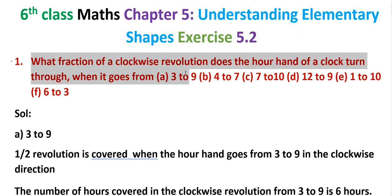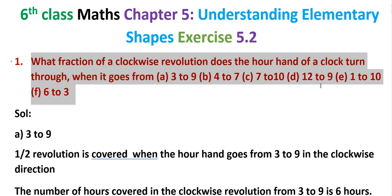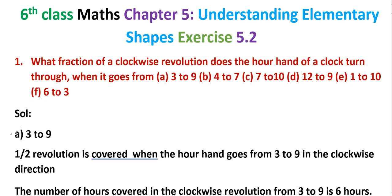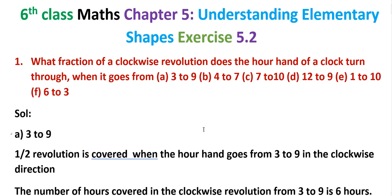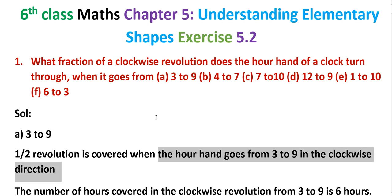First question: what is the fraction of clockwise revolution the hour hand of the clock turns through? It goes from 3 to 9, 4 to 7, 7 to 10, 12 to 9, 1 to 10, and 6 to 3. Solution A: 3 to 9. Half revolution is covered when the hour hand goes from 3 to 9 in the clockwise direction.